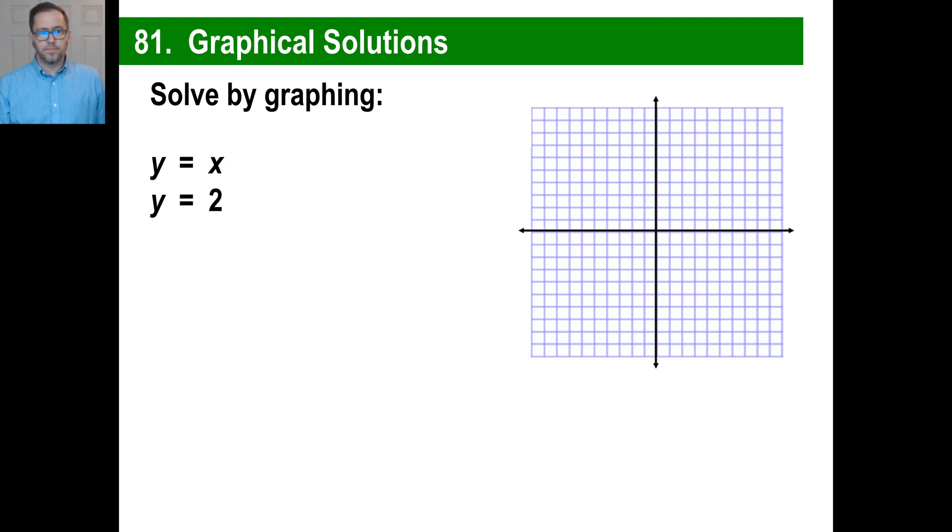Here's a weird one. Let's do the bottom one first here. Y equals 2. Now, we know how that works, right? If we have y equals 2, that just means the entire time the value of the line is at, crosses the y-axis at the 2 right there.